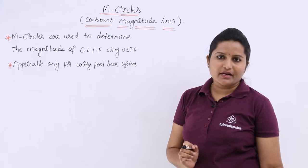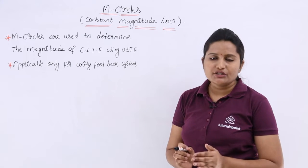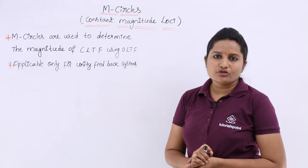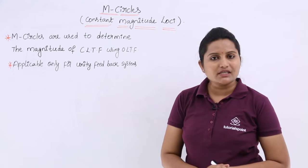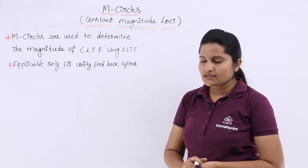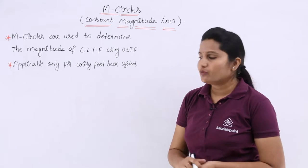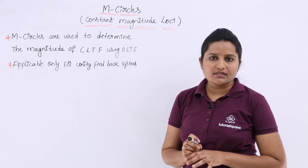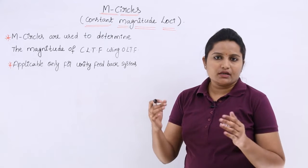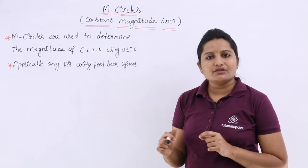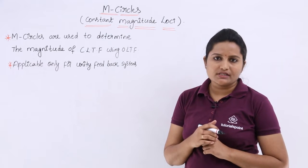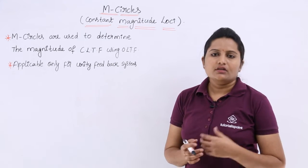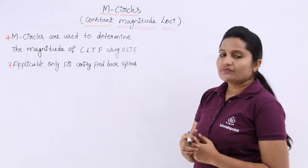Without knowing the closed-loop transfer function, if you want to find the magnitude of the closed loop, you can estimate it using M circles. One important constraint: M circles are applicable only for unity feedback systems. So if you have an open-loop control system and don't know the closed-loop transfer function, and it is a unity feedback closed-loop system, you can estimate the magnitude using the open-loop transfer function.